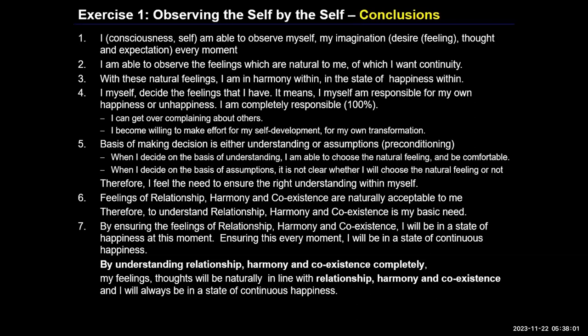We were able to observe that self is one unit, body is another unit. It is one set of activity — self — body is another set of activity. How did you come to know? By way of observing it. So we are observing it and seeing it directly. Then we looked at the self and started observing the self and found that self is not one single activity. There are activities taking place in the self. So we started observing that — that is what we were doing in exercise one. We were trying to observe the imagination.